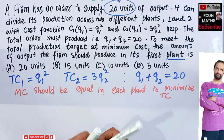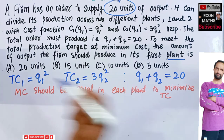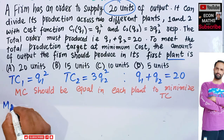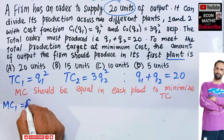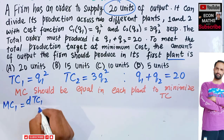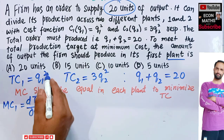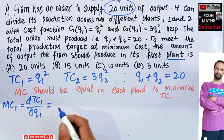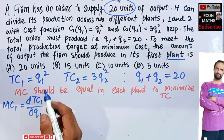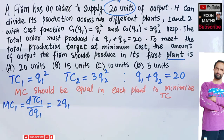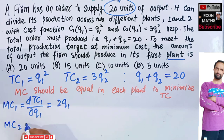If TC1 denotes the total cost in Plant 1, then the marginal cost in Plant 1 is simply the derivative of TC1 with respect to Q1. Taking the derivative of Q1 squared with respect to Q1 gives us the marginal cost in Plant 1, which is 2Q1.